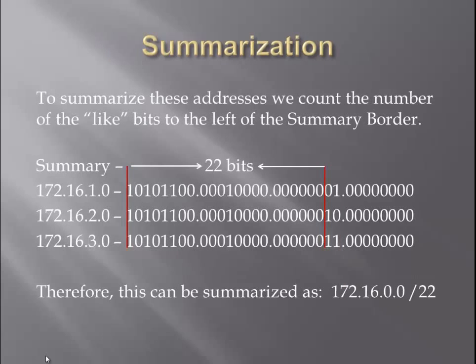Once this is accomplished, you simply count the number of bits starting from the furthest left all the way to the summary border. In this case, there are 22 bits. Therefore, our addresses 172.16.1, .2, and .3 can be summarized into 172.16.0.0 slash 22.